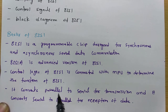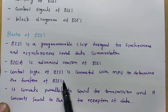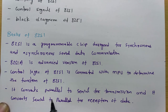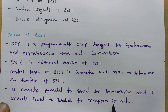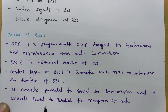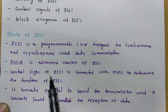8251 converts parallel to serial for transmission of data, and it converts serial to parallel for reception of data. When it receives data serially, it converts that to parallel and gives it to the microprocessor. I will explain step by step how that happens in 8251.